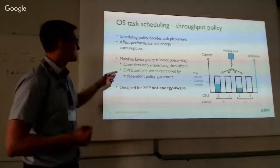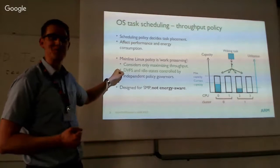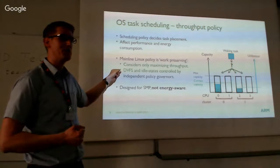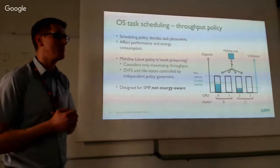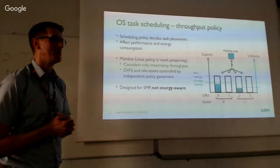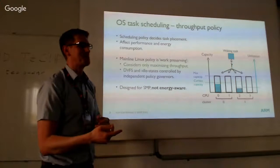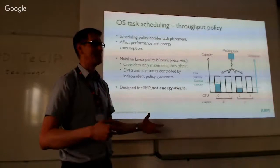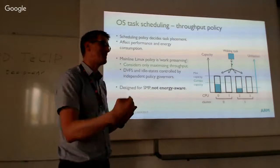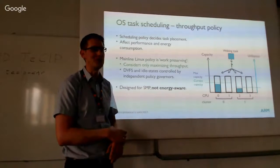This is an old slide — it's not entirely correct that DVFS is completely independent of the scheduler, because now we have Schedutil, which is the first step toward integrating scheduling policies with OPP selection. We always had the idle subsystem depending on the scheduler, but the scheduler never fed back information to the idle subsystem — for example, 'if you idled that CPU instead of this one, I could have done a lot better.' That feedback has always been missing.